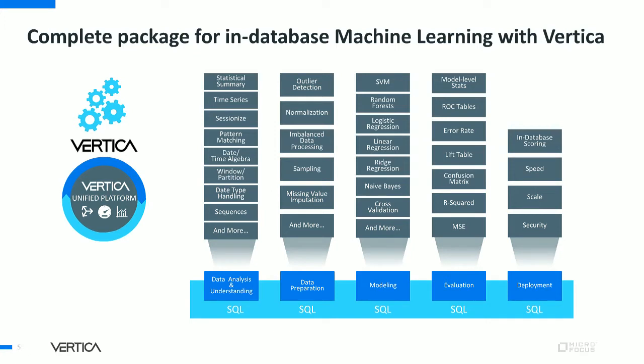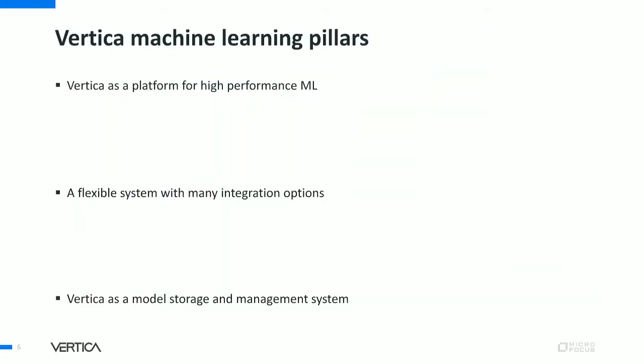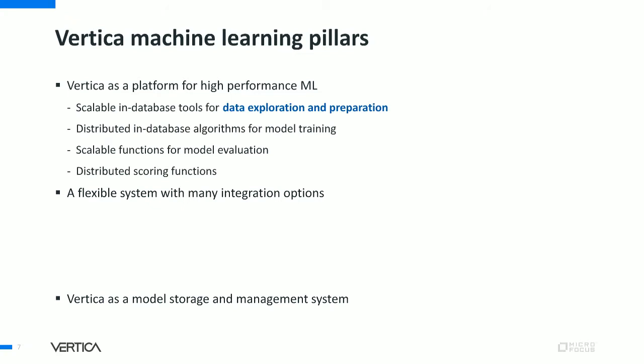Vertica machine learning covers the whole ML process: data ingestion, data analysis and understanding, data preparation, modeling, evaluation, and deployment — all inside the Vertica database. The three main pillars are: Vertica as a high-performance ML platform, with many functions for data exploration and preparation; distributed in-database algorithms for model training and prediction; scalable model evaluation functions; and distributed scoring functions.